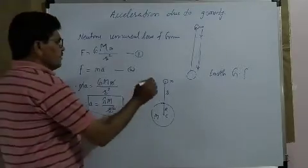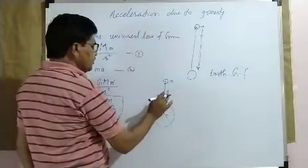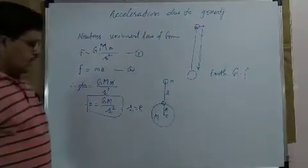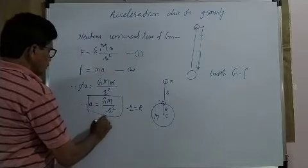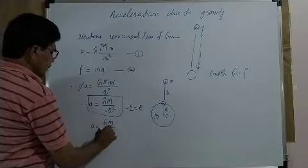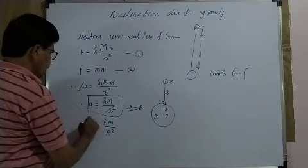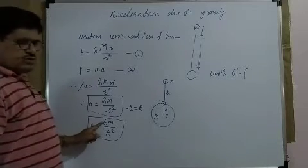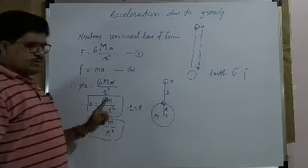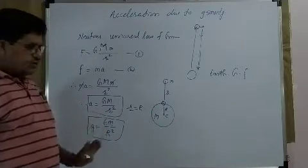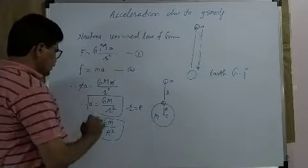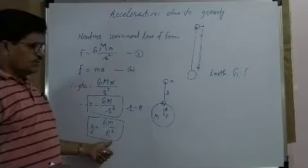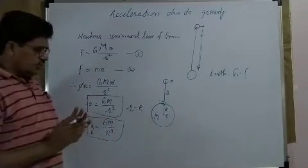Where r is the distance between the centers of these two objects. But when this object is placed on the surface of the earth, in place of small r you can take capital R. It gives a is equal to GM divided by R squared. In place of a you can take small g — this is nothing but the acceleration due to gravity. Here G is the universal gravitational constant, capital M is the mass of the earth, and capital R is the radius of the earth. Therefore the acceleration due to gravity depends upon the mass of the earth and the radius of the earth, and does not depend upon the mass of the object.